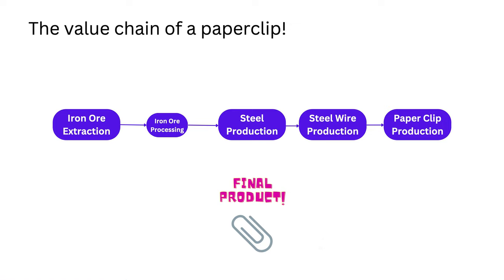The paperclip is a product that we all use at home — it's pretty typical and very small — but we don't really appreciate how complicated the process is, where it goes from a piece of iron ore all the way to a paperclip in our hands. As you can see on the slides, it all starts with iron ore extraction. Miners mine iron ore, which is then processed and made into steel. The steel is pulled into steel wires, and finally it goes into paperclip production to become the final product.